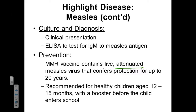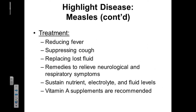Healthy children ages 12 to 15 months are encouraged to receive their first dose of this vaccine, with the booster shot given right before they enter primary school. If a patient comes down with measles, treatment options include reducing the fever with prophylactics, suppressing their cough, replacing lost fluid, and remedies to relieve the neurological and respiratory symptoms. Patients will also need an IV to maintain nutrient, electrolyte, and fluid levels, and a vitamin A supplement can also be recommended.